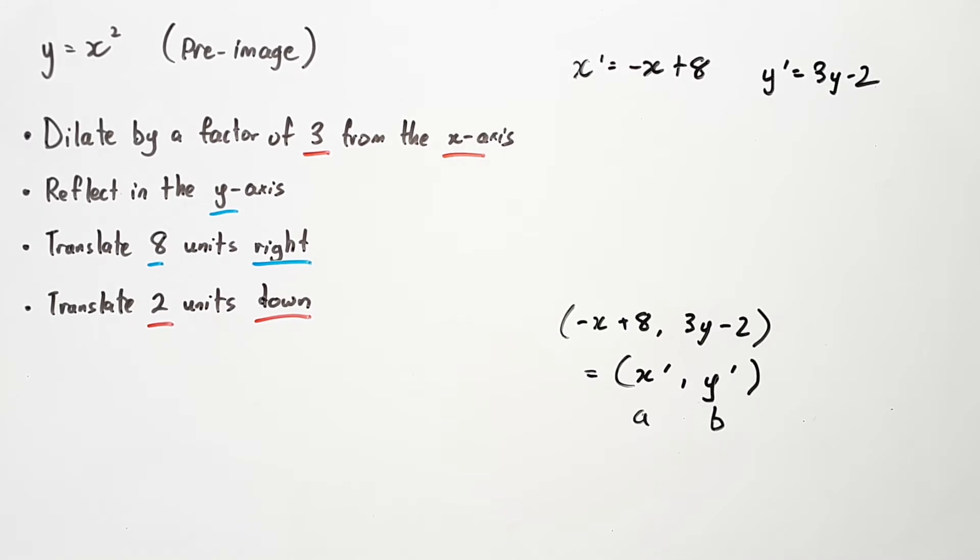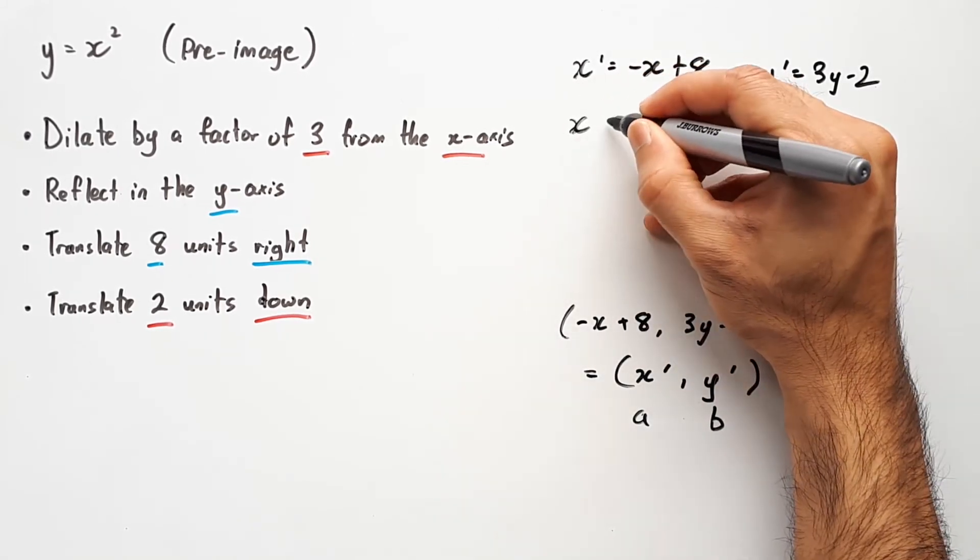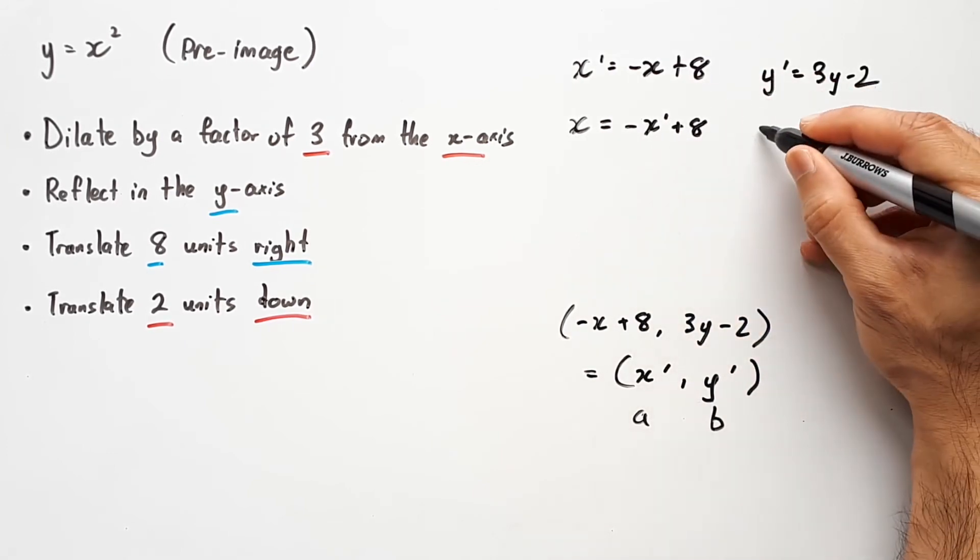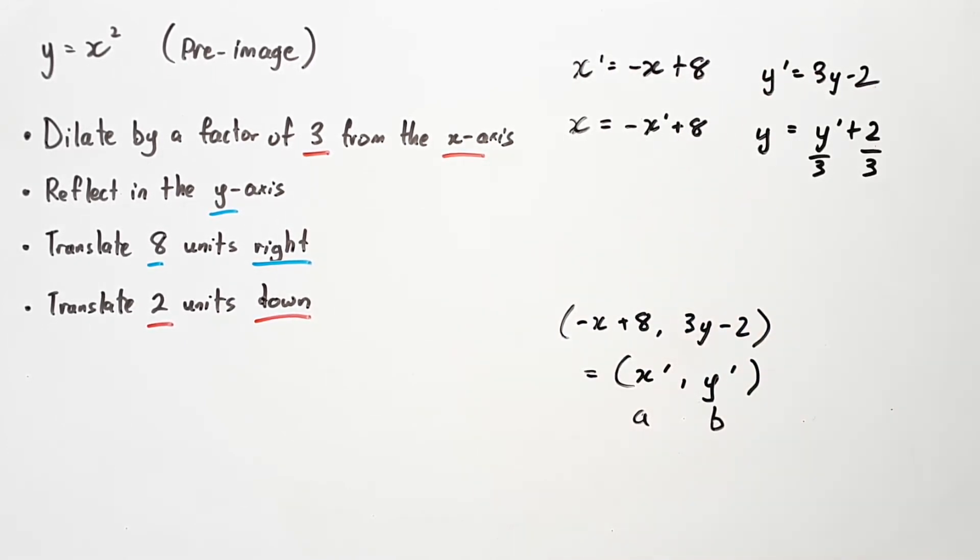Rearrange them, making x and y the subject, such that x will equal -x' + 8, and y will equal (y' + 2)/3.